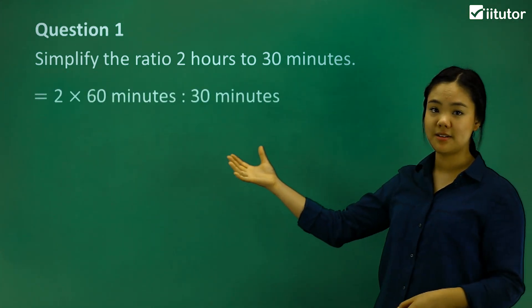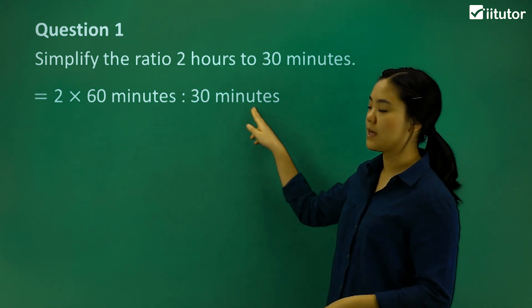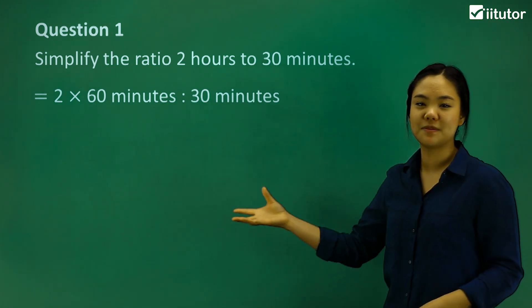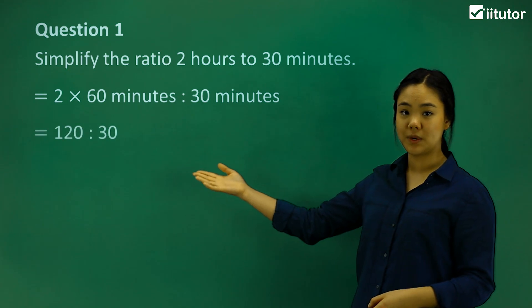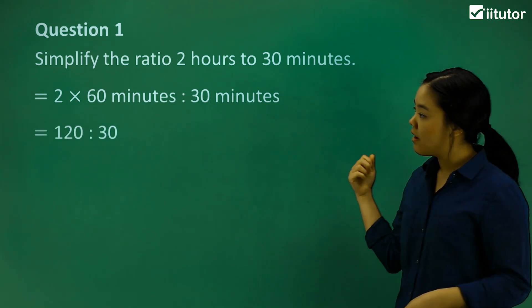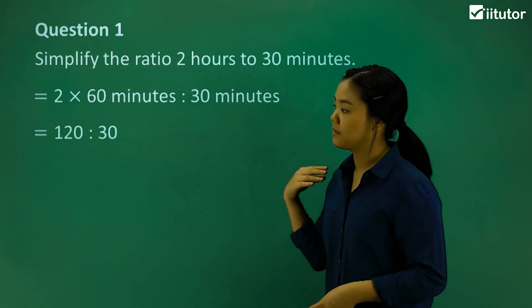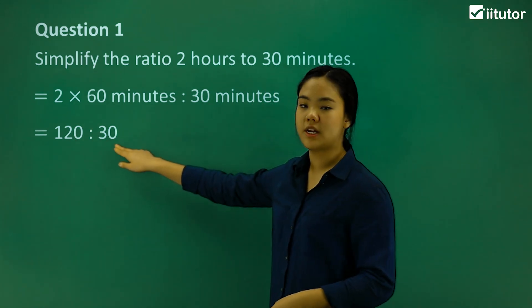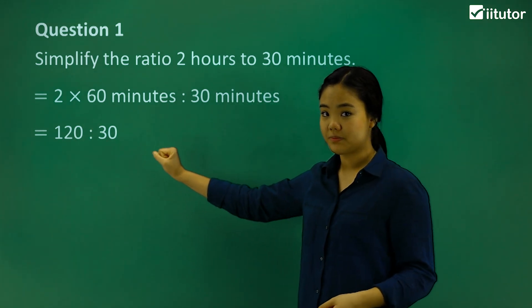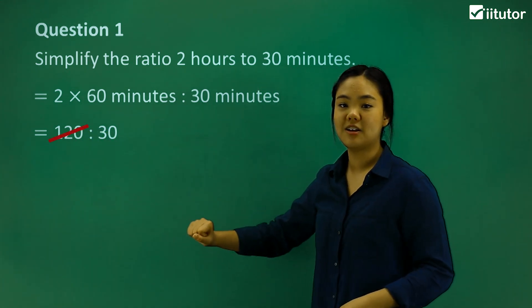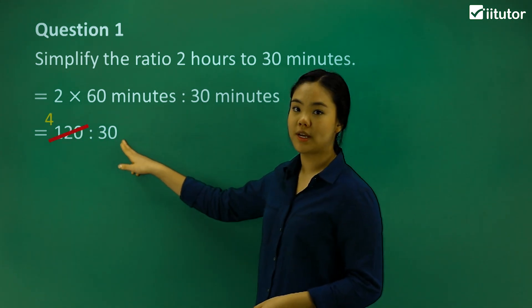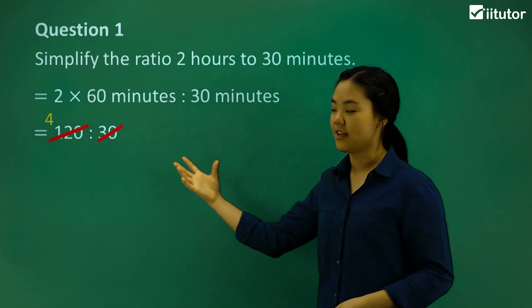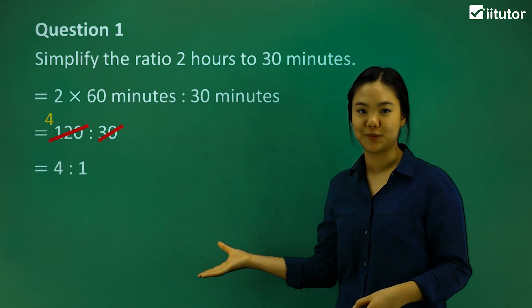So 2 times 60 minutes to 30 minutes. And simplified, that is 120 to 30. We still need to simplify further, and 30 can be divided into both sides. So we can do that. Cross that out, and that's 4. And we can cross this out, and then the final answer is just 4 to 1.